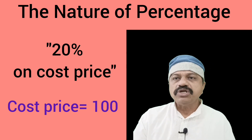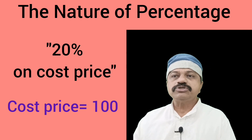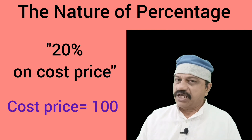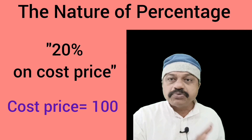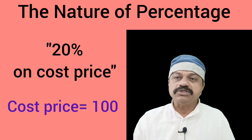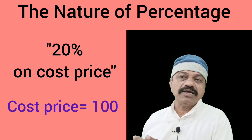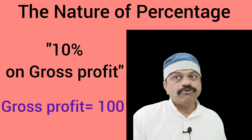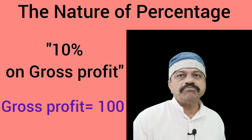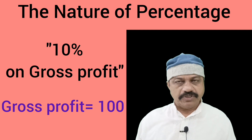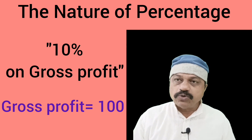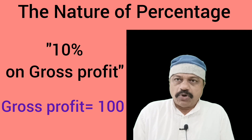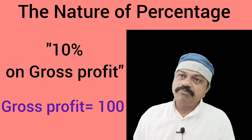Example 4: Sold goods at 20% profit on cost price. Here, 100 stands for cost price. That is, profit is equal to cost price multiplied by 20 divided by 100. Example 5: General manager is eligible for 10% commission on gross profit. Here, 100 stands for gross profit. That is, commission is equal to gross profit multiplied by 10 divided by 100.